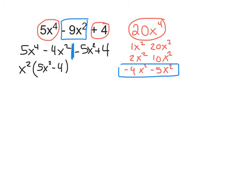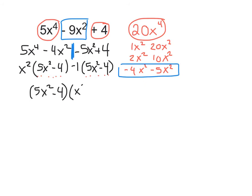On the right-hand side, we're going to factor out negative 1. When we factor out negative 1, we're left with positive 5x squared. And factoring a negative 1 out of the last term gives us minus 4, because negative 1 times negative 4 is positive 4. So now, do our parentheses match? Yes, they do. Our parentheses are 5x squared minus 4. We write that down, and then we write what's left: x squared minus 1.